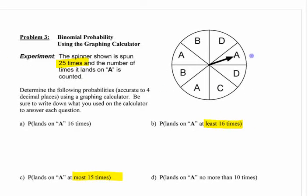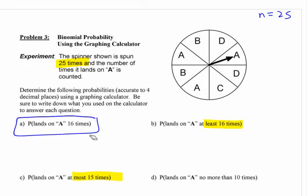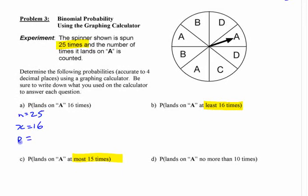We're going to work with this situation here. You're spinning this thing 25 times, so n is 25. We want to know what's the chance of having, in this case, x is 16. What's the probability of success? What's the chance it's going to end up on A? If all sections are equal, it's 3 out of 8. So that means q is 5 out of 8.